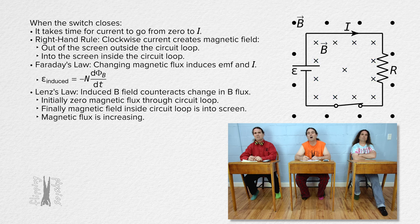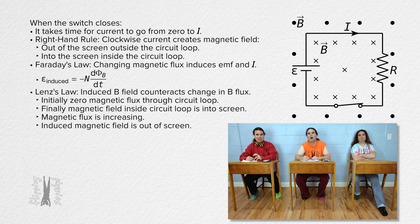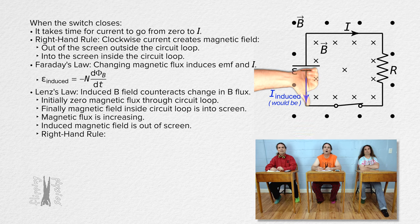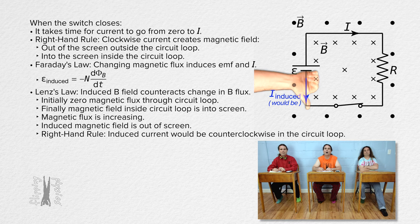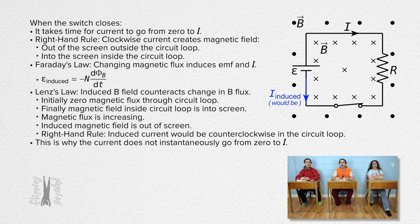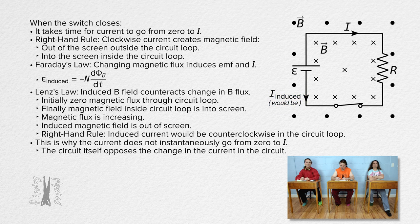Lenz's law states that an induced magnetic field is created to counteract the change in magnetic flux. Therefore, the induced magnetic field is out of the screen. Using the alternate right-hand rule, looking at the wire on the left, fingers curl out of the screen inside the loop. That means an induced current would be down in the wire on the left, so an induced current would be counterclockwise in the loop from this perspective. So this is why the current in the circuit does not instantly change from zero to I. The current in the circuit takes time to transition from zero to I because the circuit itself opposes the change in current.